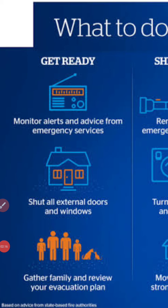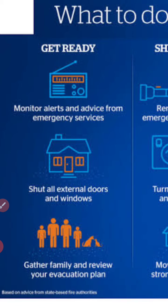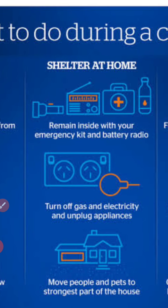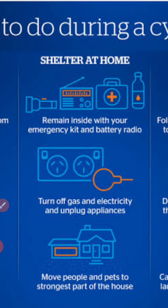ایسی صورتحال میں ہمیں کیا کرنا چاہیے؟ سب سے پہلے آپ نے اپنے پاس ایک radio available رکھنا ہے جس کے ذریعے آپ کو different alerts کے بارے میں پتہ چلتا رہے گا۔ Next، آپ نے doors اور windows کو close کر دینا ہے، اپنے family members کو gather کر لینا ہے اور plan کرنا ہے۔ Inside the home، آپ نے ایک emergency kit اور battery radio available رکھنا ہے جس میں batteries، torch، tin food with a tin opener، اور drinking water شامل ہیں۔